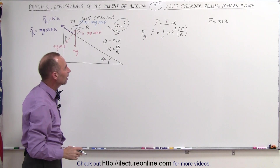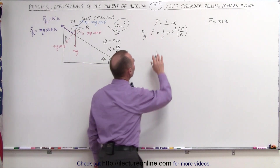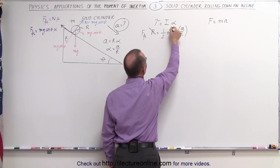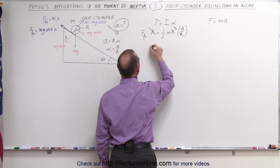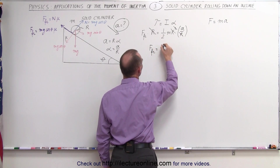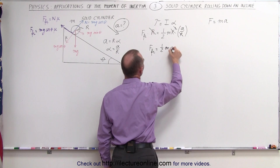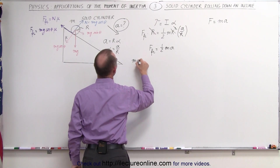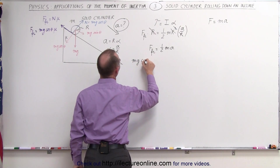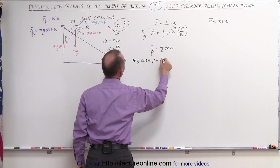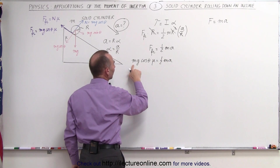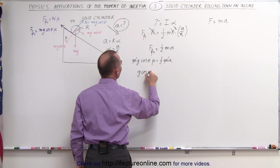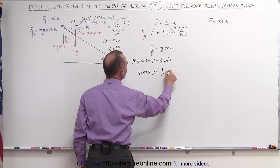The acceleration a down the incline is ultimately what we're looking for. Notice we have an r and an r squared, so that cancels out — an r in the numerator and an r in the denominator. We're left with: friction force equals one-half the mass times acceleration. If we plug in what the friction force equals, we get mg cosine of theta times mu equals one-half m times a. Since we have m on both sides, that cancels out, giving us g cosine of theta times mu equals one-half times acceleration.